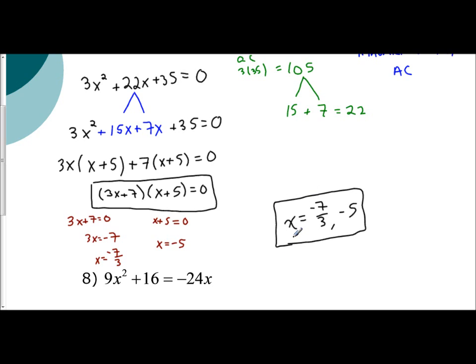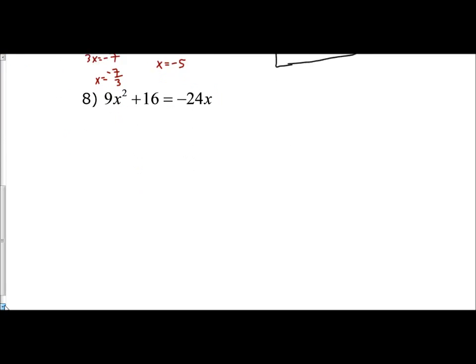So get it into factored form, set each factor equal to 0, and solve. Let's look at example number 8.